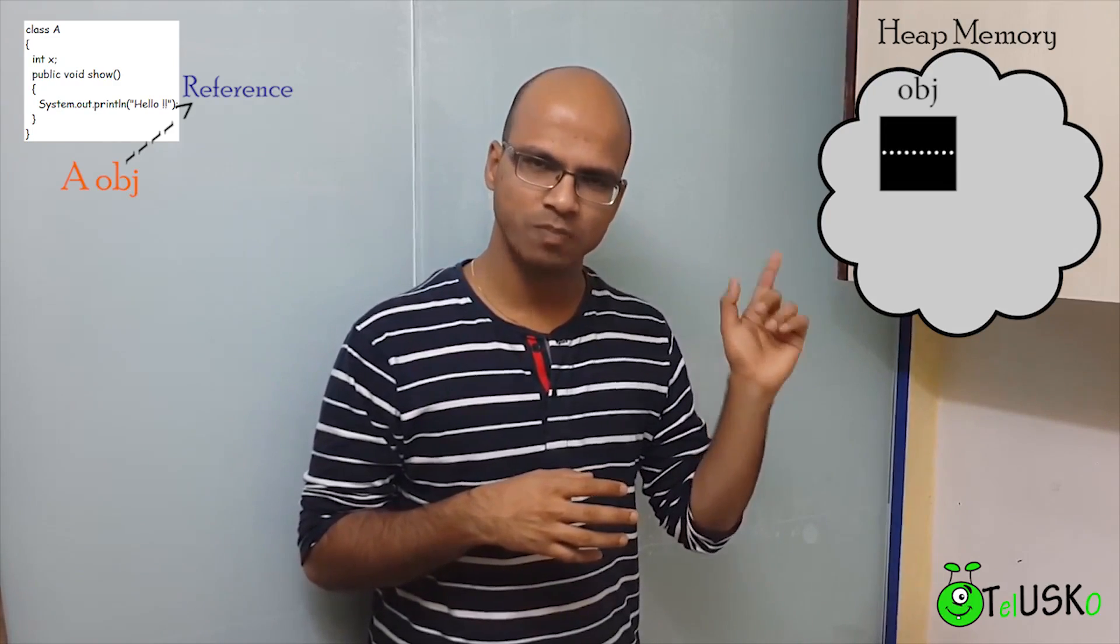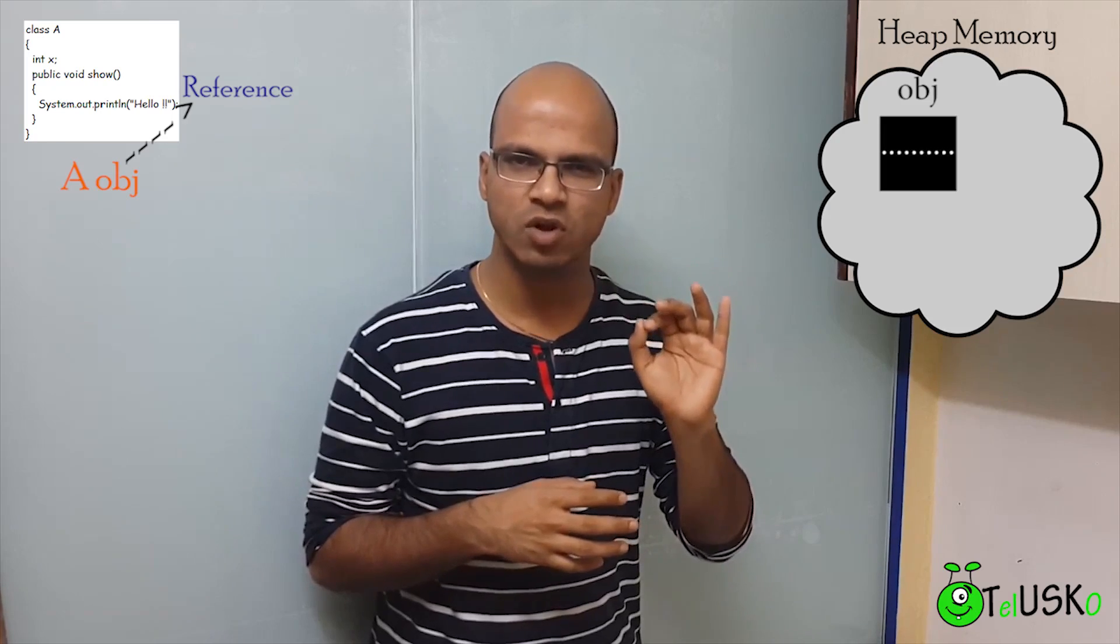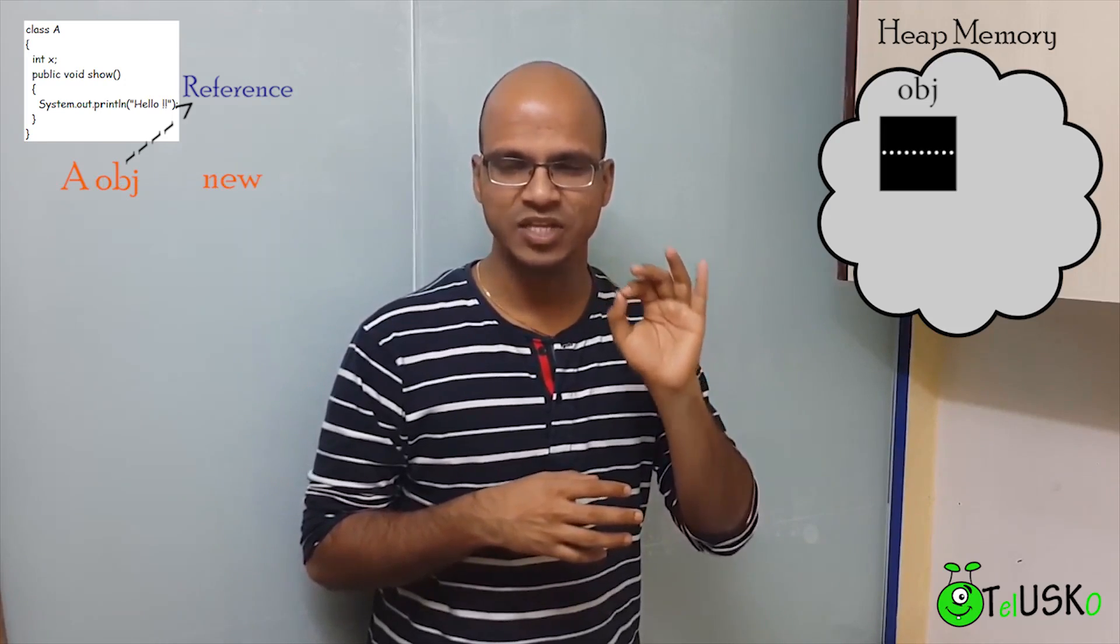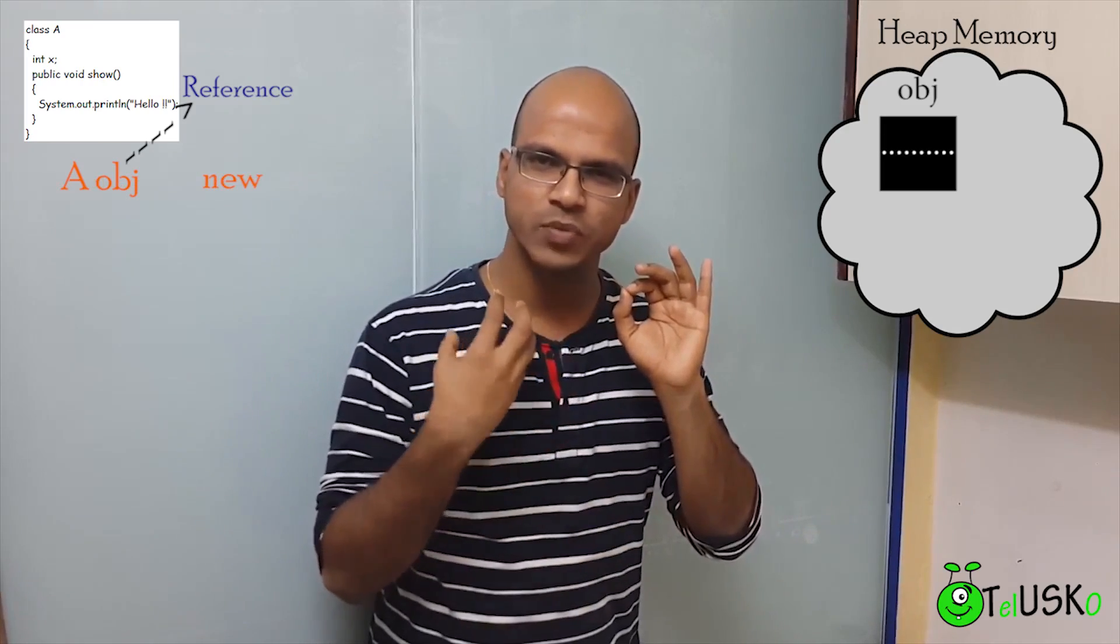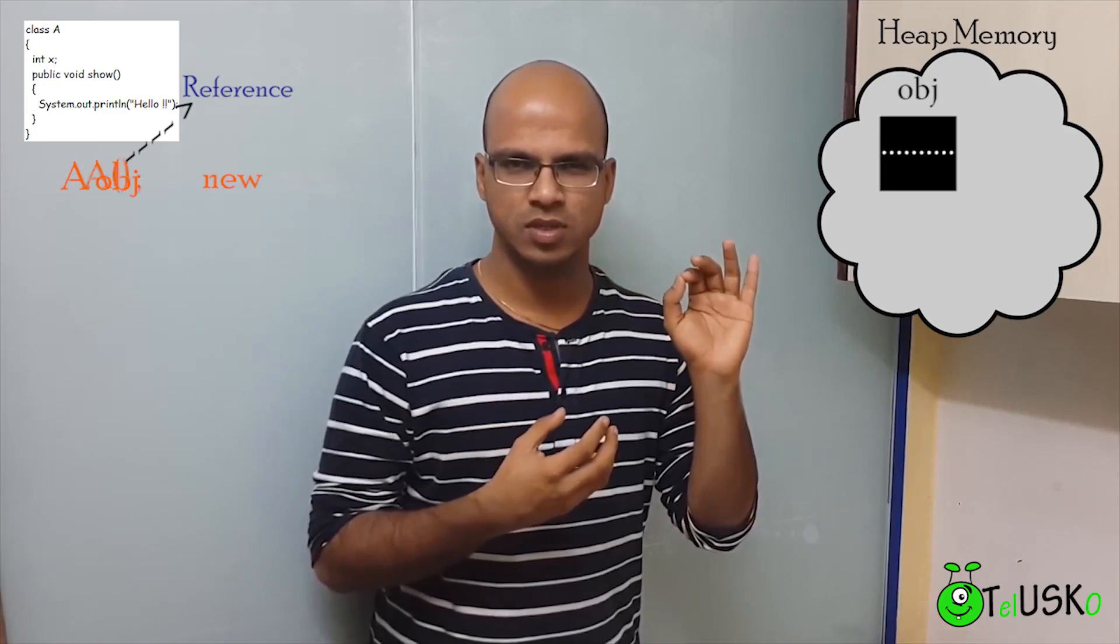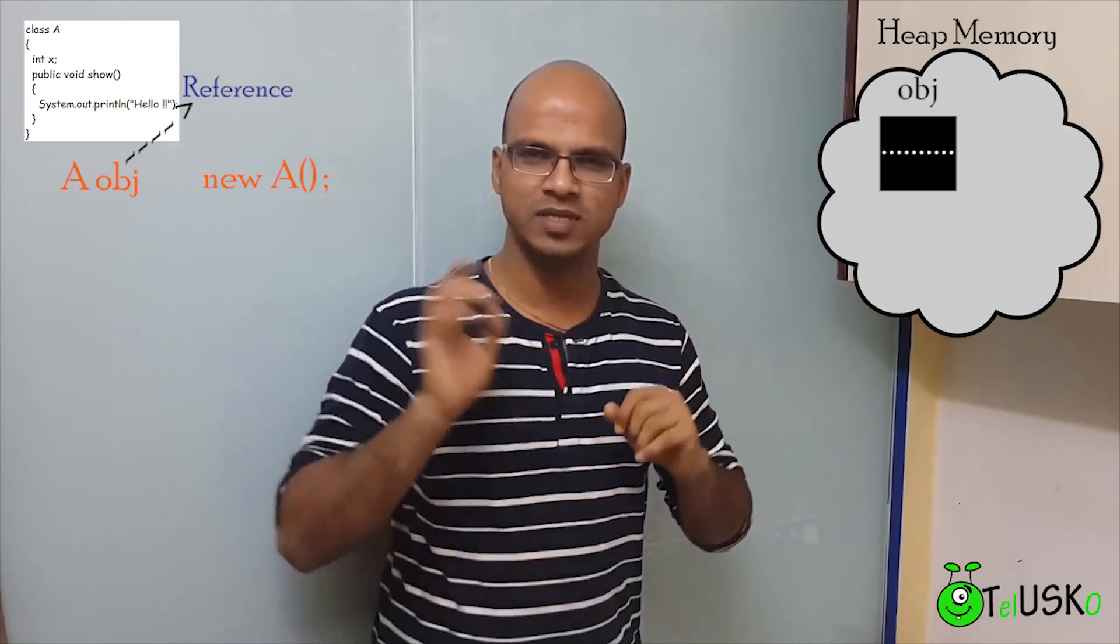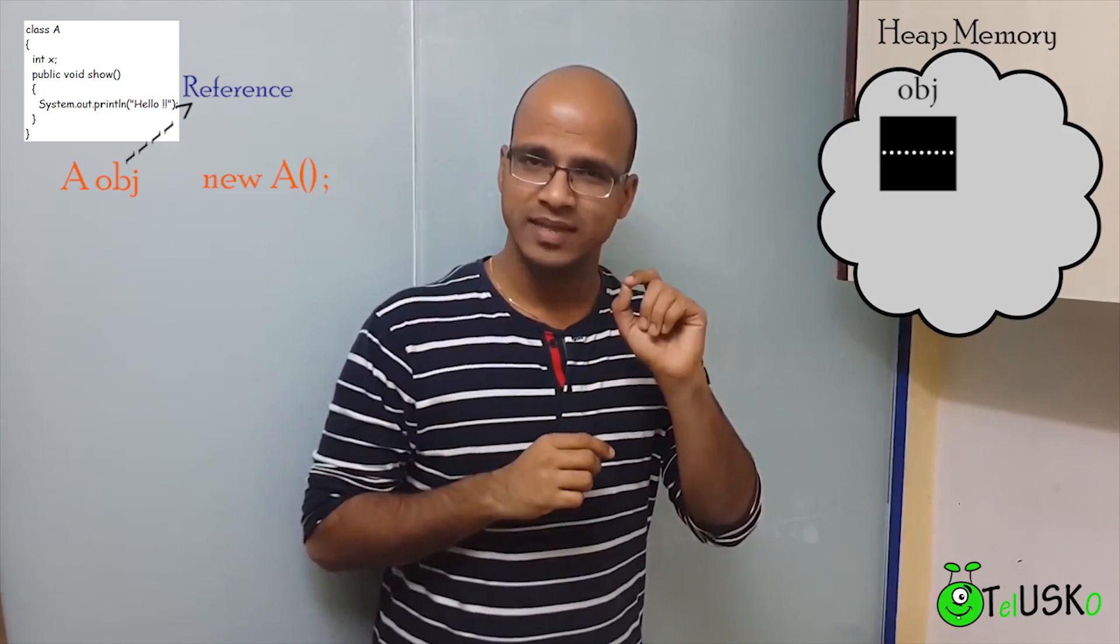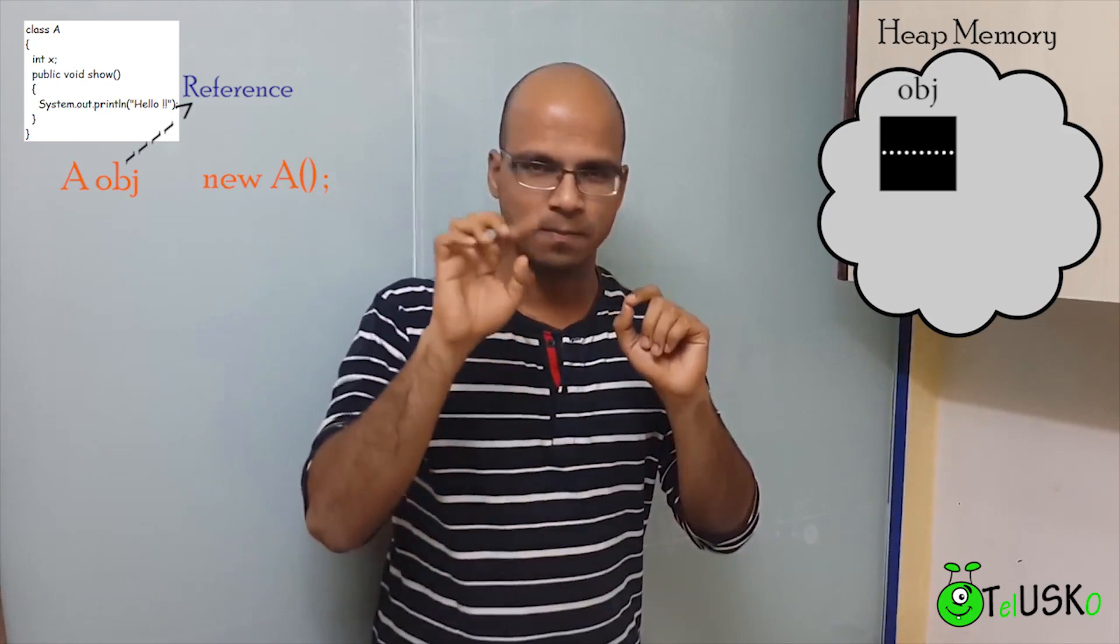In order to get an object, we have to use a keyword called 'new'. So you have to specify new and then you have to mention how much memory you need. And that's why we require constructors. So that's A and bracket. You can see we have A obj, and that's a reference. Then we have new A bracket.